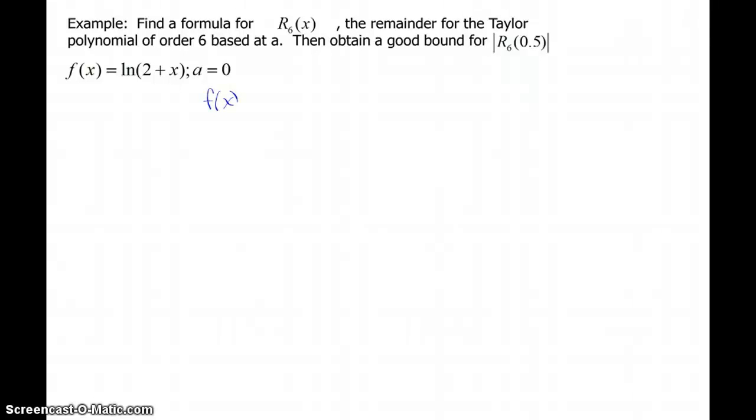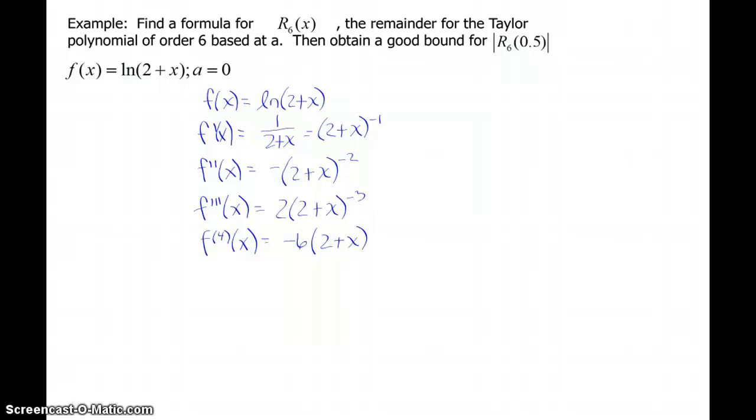We need f(x), which we're given. f'(x) is 1/(2+x). In this context, that makes it easier to find subsequent derivatives. f''(x) is negative (2+x)^(-2). There is no chain rule here - the derivative of what's inside is 1. Third derivative: positive 2(2+x)^(-3). Fourth derivative: negative 6(2+x)^(-4). Fifth derivative: positive 24(2+x)^(-5).